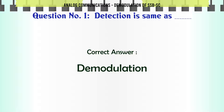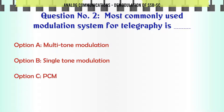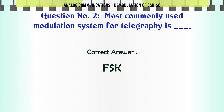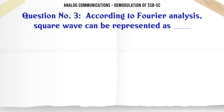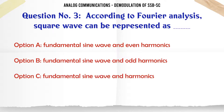Most commonly used modulation system for telegraphy is: A. Multi-tone modulation, B. Single-tone modulation, C. PCM, D. FSK. The correct answer is FSK.